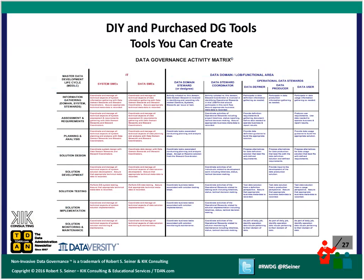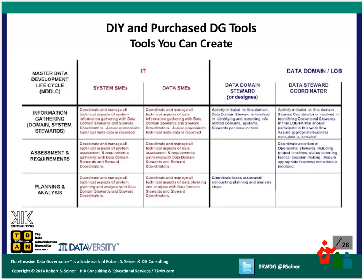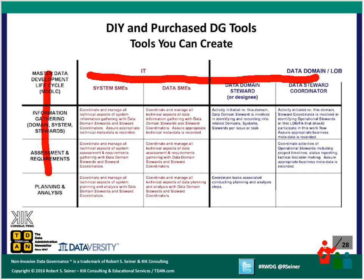A governance activity matrix is a two-dimensional matrix where we take the steps of a procedure or process down the left-hand side and the roles and responsibilities from your operating model across the top, stating what the responsibility is for each role during each step of a specific process. It takes the guesswork out of who does what and when, and formalizes the activities associated with the processes being governed. Down the left-hand side you have the different steps of your process, and across the top you have the different roles associated with your program.